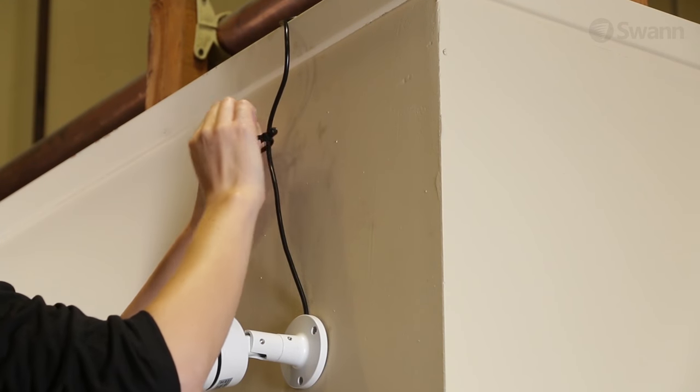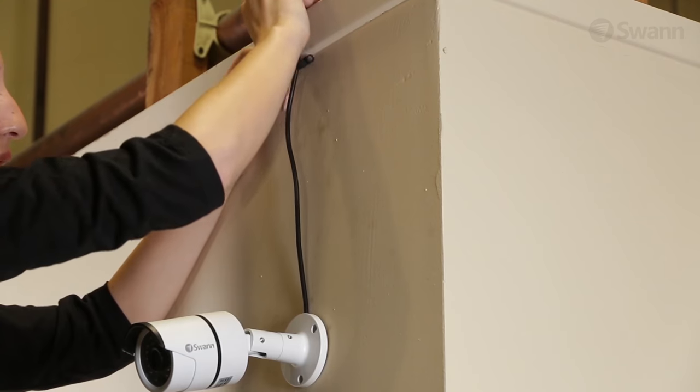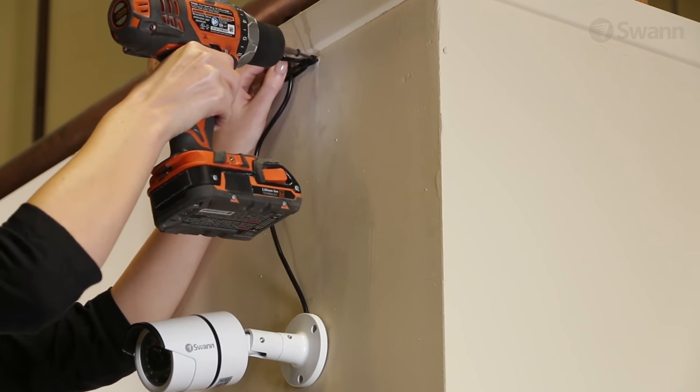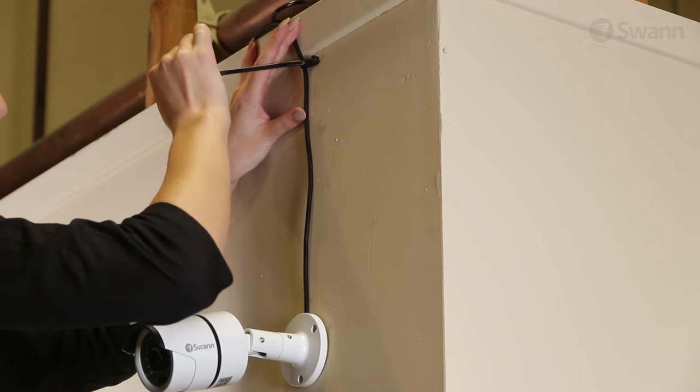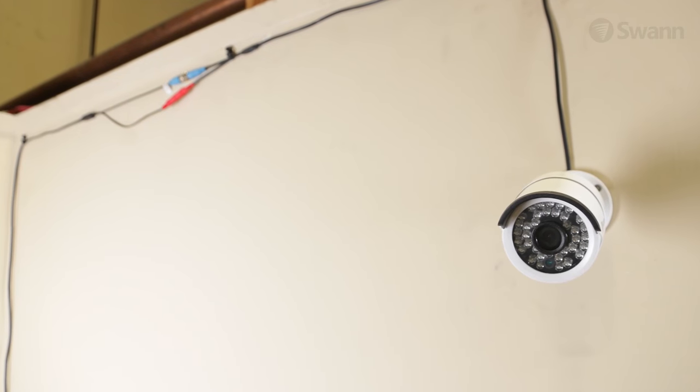To secure the cable in place, consult a hardware store to determine the best type of fastener for your particular installation. You may wish to purchase plastic cable ties or mounting clips at a home improvement or electronics store to secure the cable. Then, secure the cable, making sure to keep it nice and neat to maximize visual appeal.